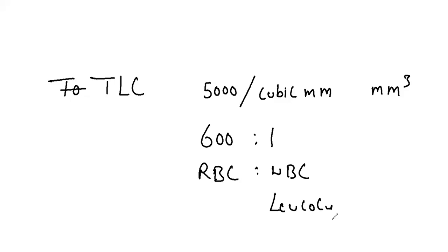Total leukocyte count is 5,000 to 10,000 per cubic millimeter. Usually the RBC to WBC ratio is 600 RBCs to 1 WBC. When WBC count increases, we call it leukocytosis. When WBC count decreases, we call it leukopenia.